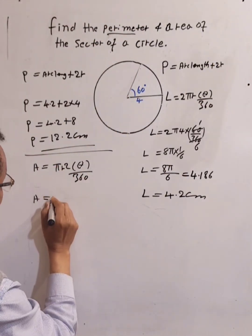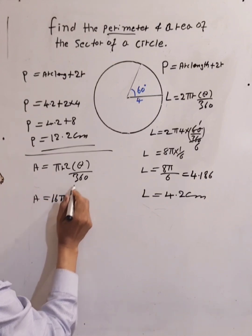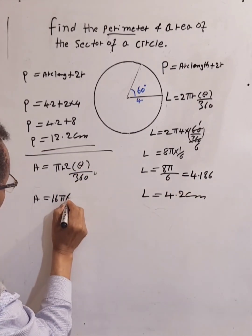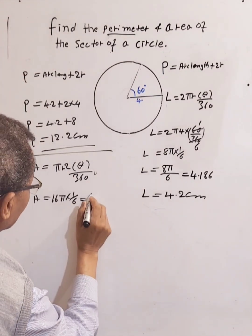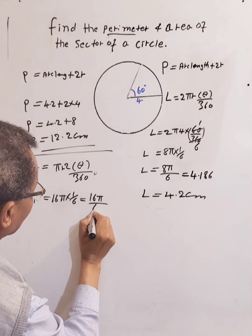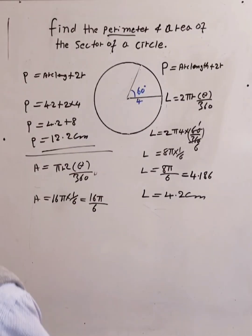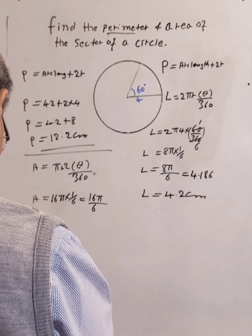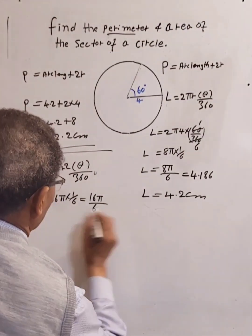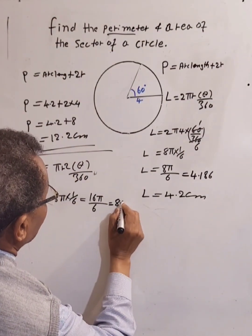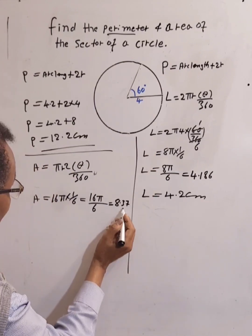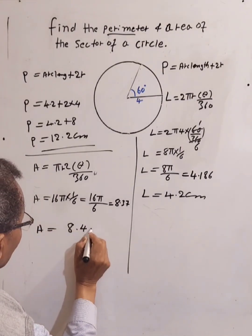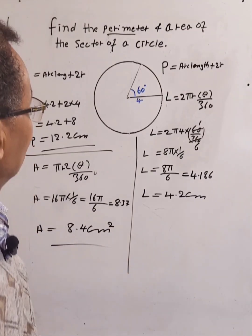We know r² is 16 times π, and 60 over 360 is 1 over 6. So it equals 16π over 6. Let's calculate: 16π divided by 6 equals 8.37. Rounded to one decimal place, this gives us 8.4 centimeters squared. Thank you very much.